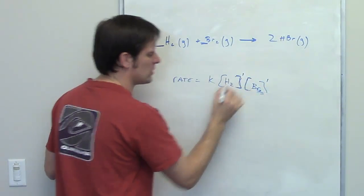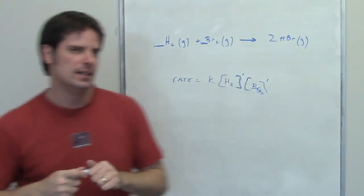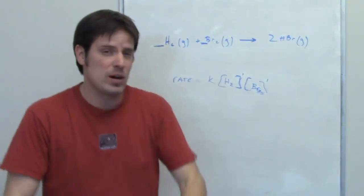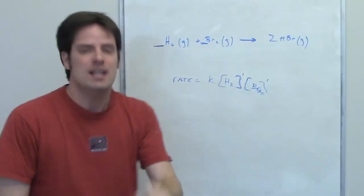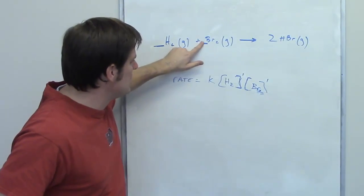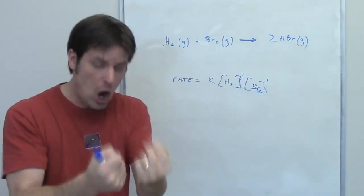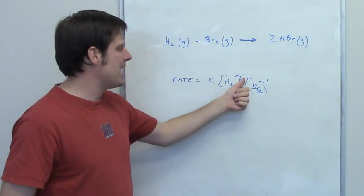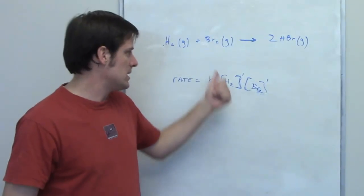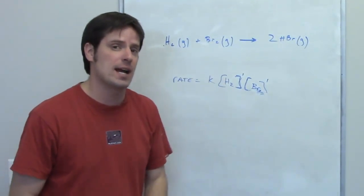So what I told you before wasn't a lie. We just now have a bit more knowledge and information. Once again, if you have the specific stepwise mechanistic reaction that you know is the slow reaction, then M and N are equal to the coefficients in front of the reactants in that reaction.